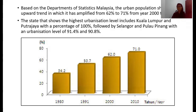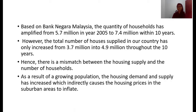According to the Department of Statistics Malaysia, the urban population shows an upward trend, amplifying from 62% to 71% from year 2000 to 2010, as shown in the graph below. Based on Bangdagar Malaysia, the quantity of households has amplified from 5.7 million in year 2005 to 7.4 million within 10 years. However, the total number of houses supplied has only increased from 3.7 million to 4.9 million in the same period. Hence, you can see a mismatch between the housing supply and the number of households.